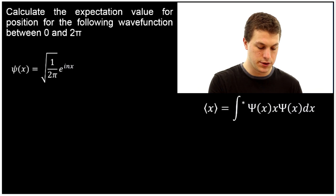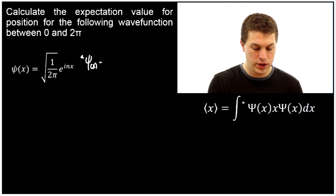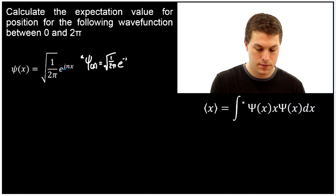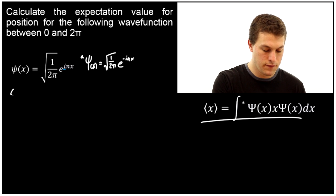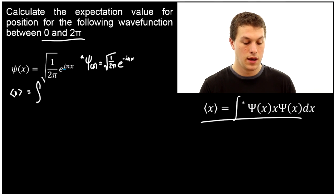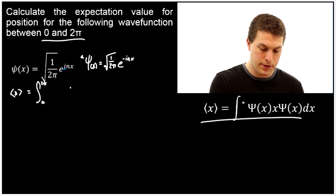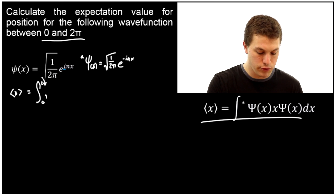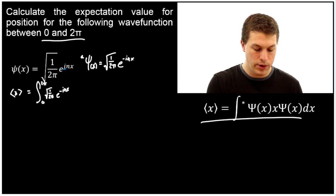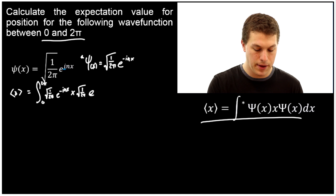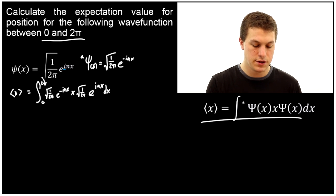First let's write down the complex conjugate of this wave function. All we do is switch the sign of i, so this positive i becomes a negative i. Now we plug everything into our formula. The expectation value for x equals the integral from 0 to 2π — whatever region our wave function is defined for. We write our complex conjugate first: square root of 1 over 2π, e to the negative in x. Then we write our operator x, multiply by our original wave function — square root of 1 over 2π, e to the positive in x — dx. When we solve this integral we'll get the expectation value for x.